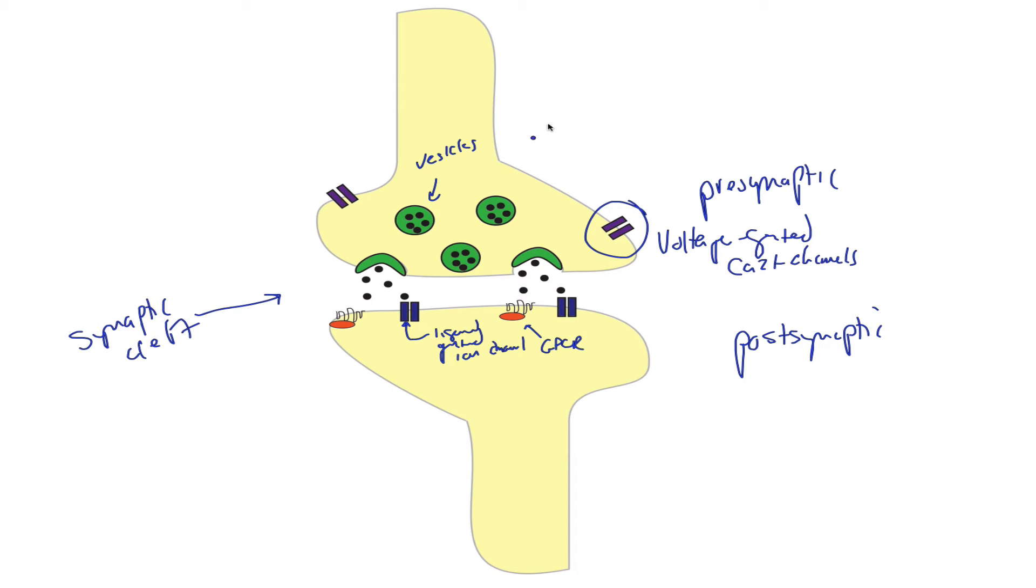So this is how it works. An action potential marches down the axon of the pre-synaptic neuron. And it causes depolarization in the synaptic terminal. That depolarization is the signal that opens the voltage-gated calcium channels. That then allows for calcium ions to flow into the cell from the extracellular fluid and accumulate in the pre-synaptic terminal. Now, this calcium influx causes the vesicles to fuse with the membrane in a process called exocytosis, where those vesicles release their neurotransmitters into the synaptic cleft.